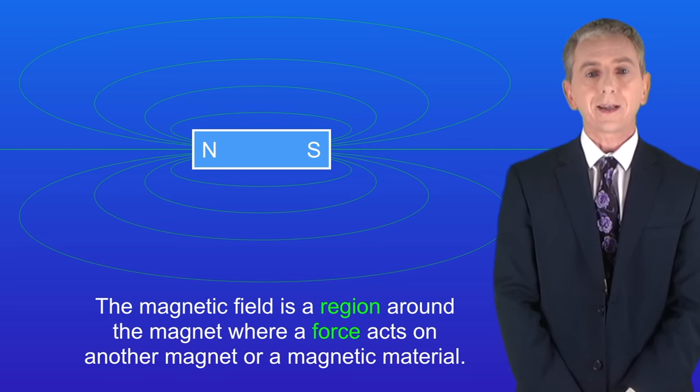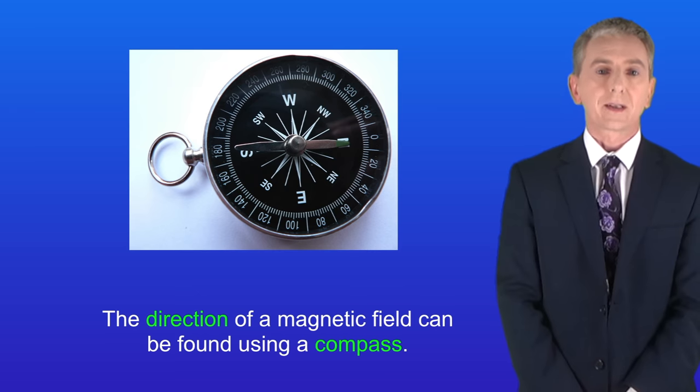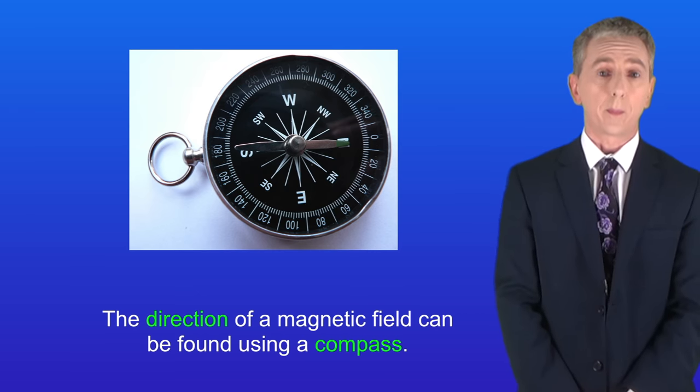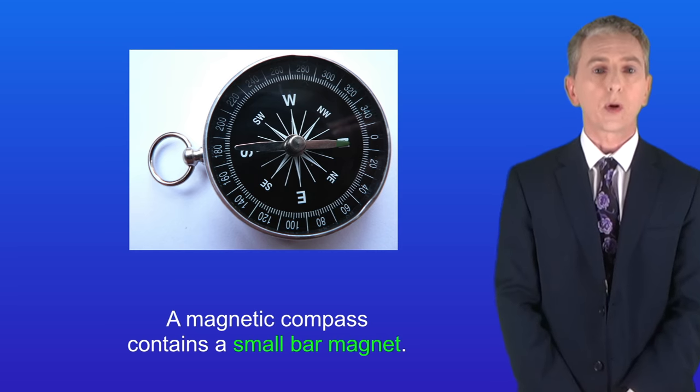As we've said the magnetic field is a region around the magnet where a force acts on another magnet or a magnetic material. Now the direction of a magnetic field can be found using a compass. A magnetic compass such as this one contains a small bar magnet.